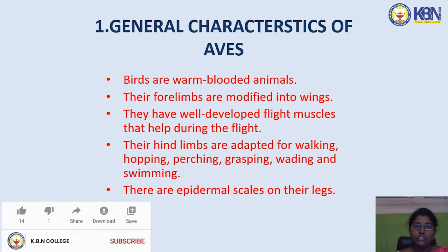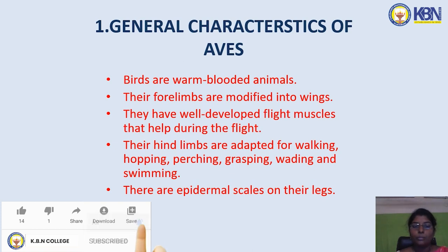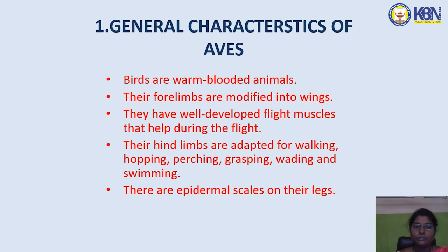Good morning students. Today we are going to learn about biology, unit number four: general characters of Aves. Birds are warm-blooded animals. Their forelimbs are modified into wings. They have well-developed flight muscles that help during flight. Their hind limbs are adapted for walking, hopping, perching, grasping, wading, and swimming.